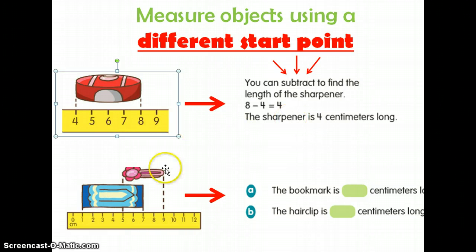Let's try this one. Let's see if you can do this one on your own. This is another example. For example, we have a bookmark here. And if you notice, they did not start at zero. It actually started at one, and then it ends at seven.